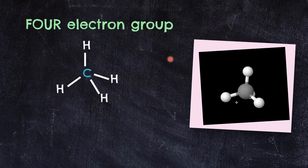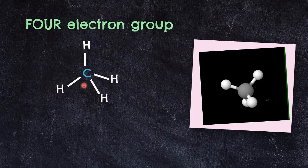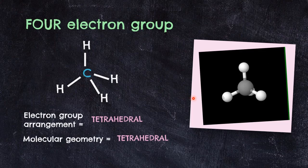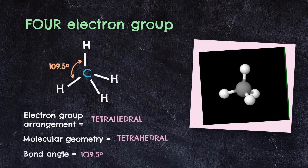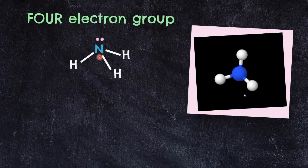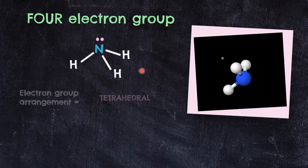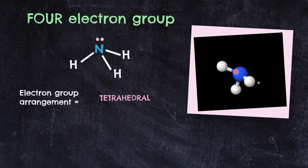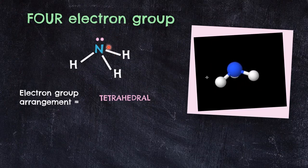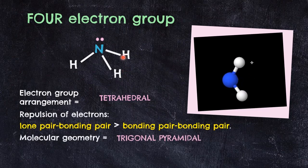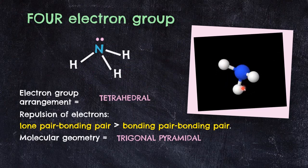For 4 electron groups, there are 3 different molecular geometries. The 3D shape of methane is the same as its electron group arrangement — tetrahedral — due to only bonding pair–bonding pair electrons being present, with a bond angle of 109.5°. For ammonia, nitrogen is the central atom surrounded by 3 hydrogen atoms and 1 lone pair, making 4 electron groups. The arrangement is still tetrahedral, but the 3D shape shows only the 3 NH bonds. The lone pair replaces one bond in the tetrahedral, and the lone pair–bonding pair repulsion pushes the atoms a little bit closer.